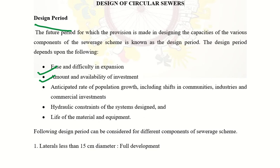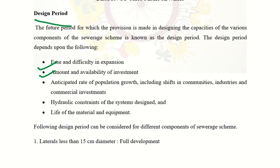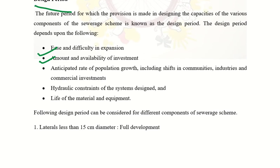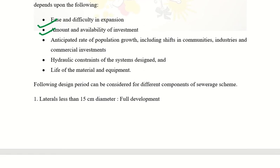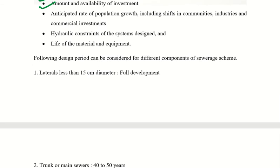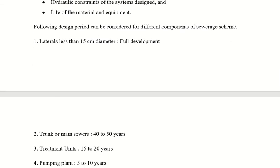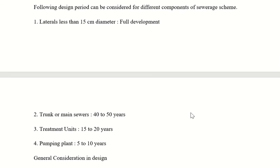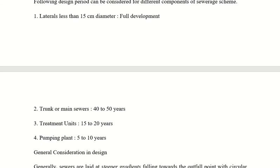For laterals, you have a full development scheme. For a trunk sewer, it is 40 to 50 years. For treatment, it is 15 to 20 years. For a pumping plant, it is 5 to 10 years.